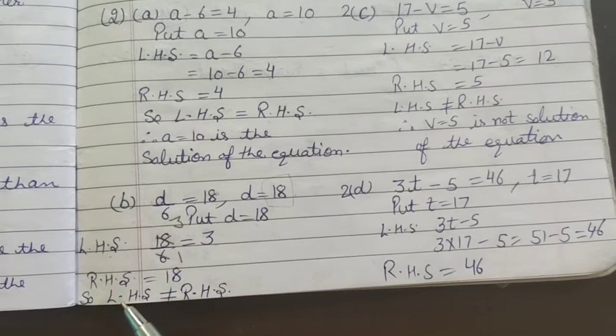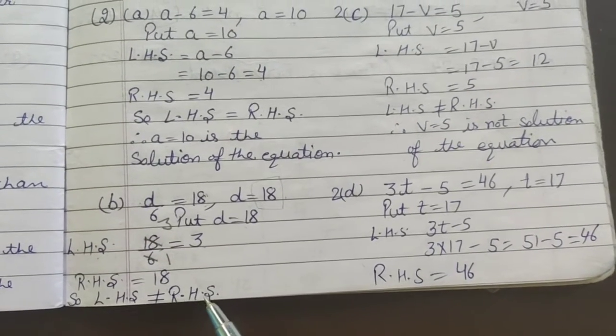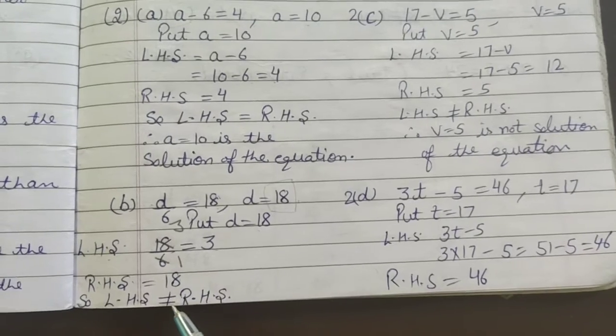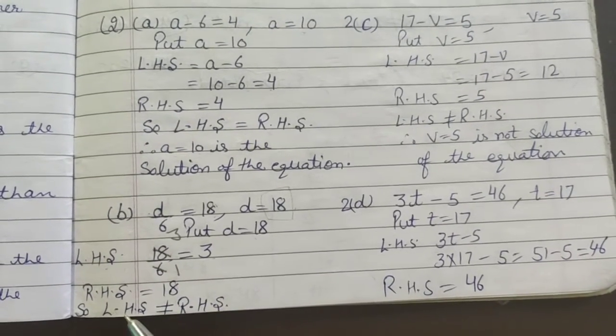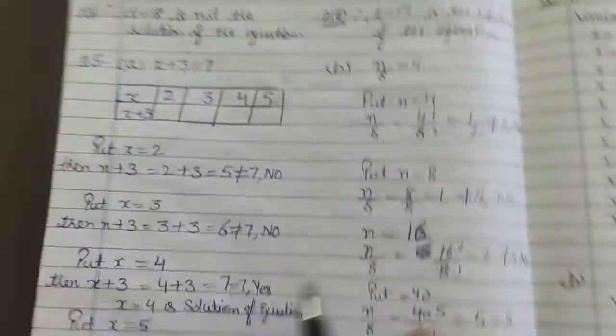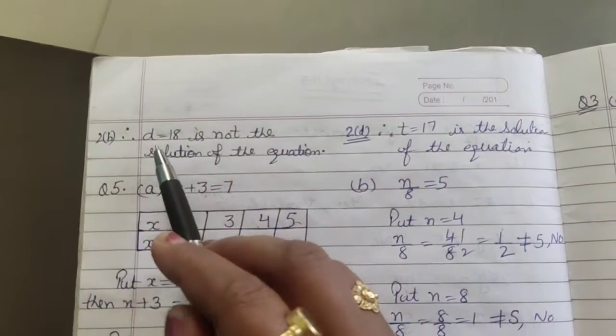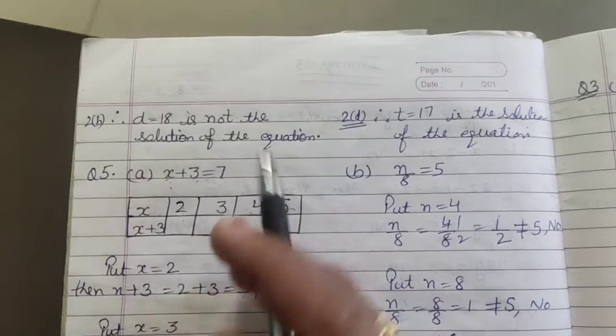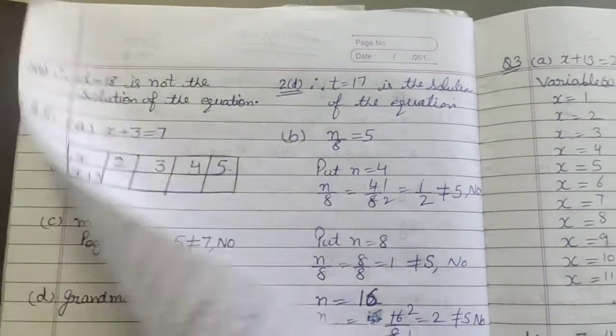So it means left hand side is not equal to right hand side. Where I put a cross on the equals sign, we say left hand side is not equal to right hand side. So it means, therefore d equals 18 is not the solution of the equation.